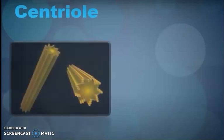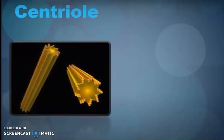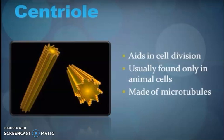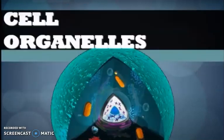Centrioles help in the cell division process — they help to initiate cell division. They are found only in animal cells and are made up of microtubules. This concludes our overview of cell organelles.